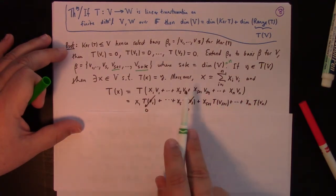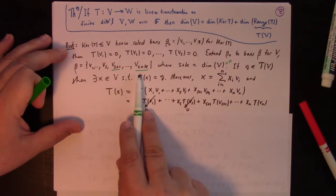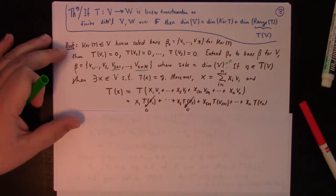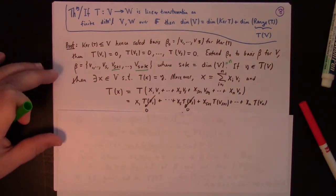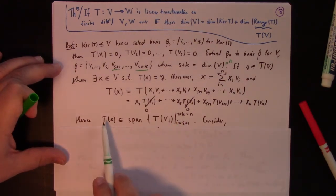So this suggests to me that the image of the last part of the beta basis, the part that's not in the kernel, that that actually forms a basis for the image. All right? And that's what we're about to prove. So we've got that it's a span. We have that the images s plus 1 through s plus k span the image.